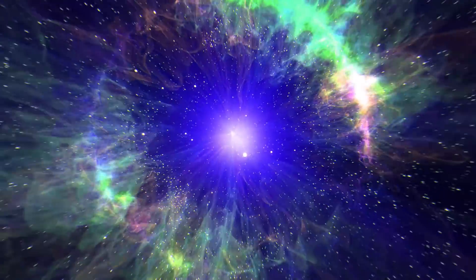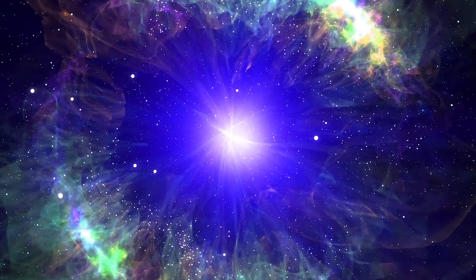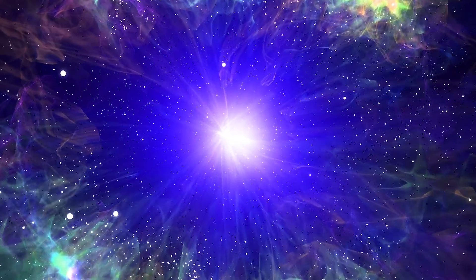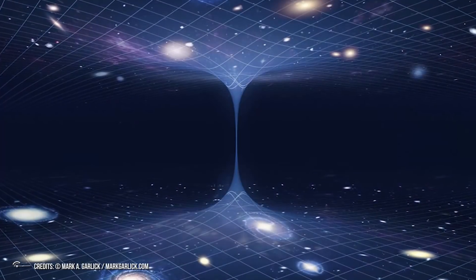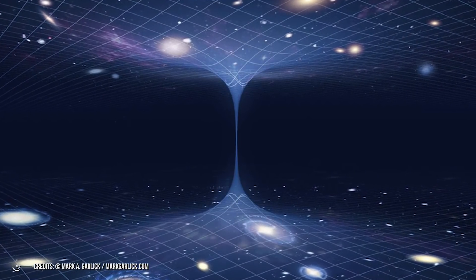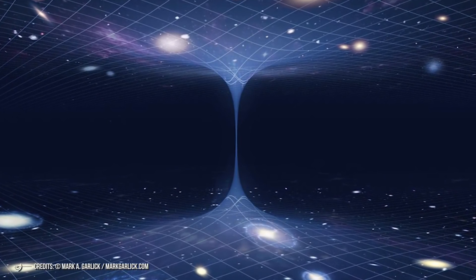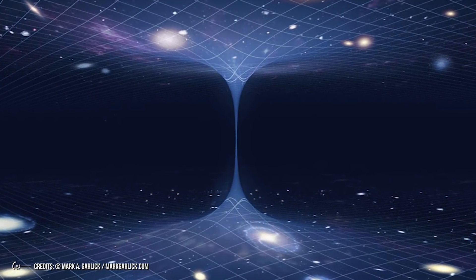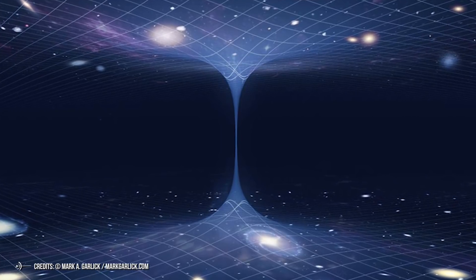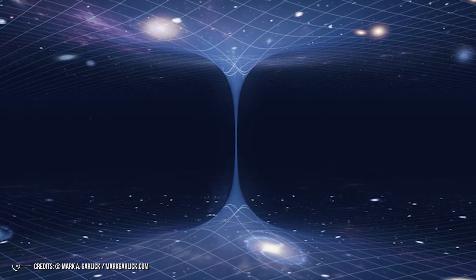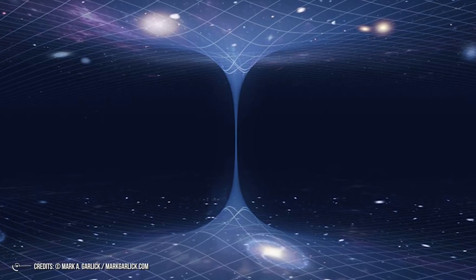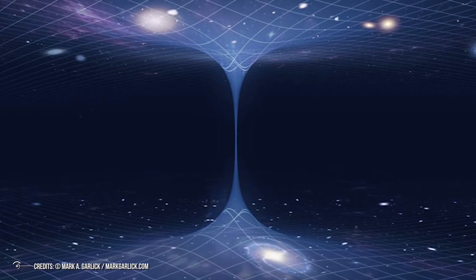In fact, physicists say that a wormhole containing exotic matter could stay open and unchanging for longer periods of time. Such a wormhole would be more stable and would allow us to pass through its throat. We have no idea whether this exotic matter exists or not, but if it did, it would have a negative energy density and a large negative pressure. No known object fulfills such requirements. Such matter has only been seen in the behavior of certain vacuum states as part of quantum field theory.